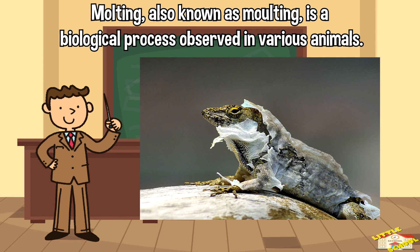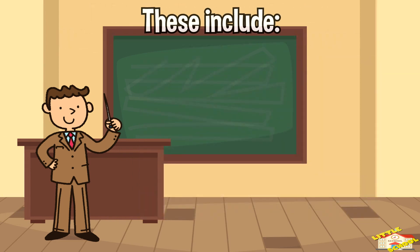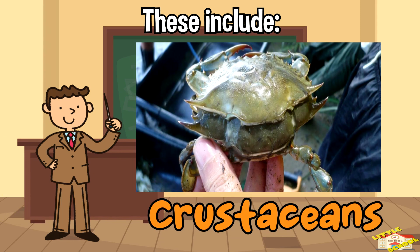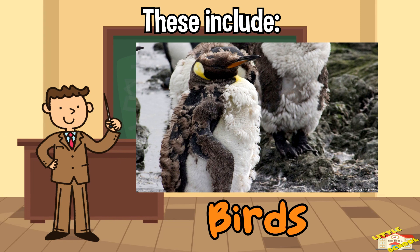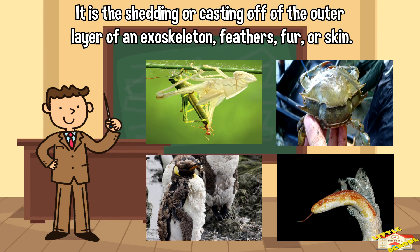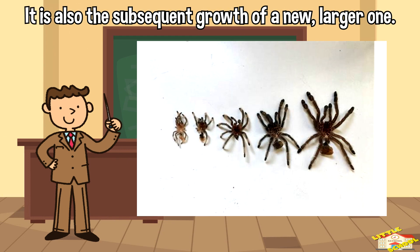Molting is a biological process observed in various animals. These include insects, crustaceans, birds, and reptiles. It is the shedding or casting off of the outer layer of an exoskeleton, feathers, fur, or skin, and also the subsequent growth of a new, larger one.